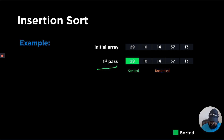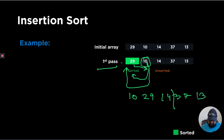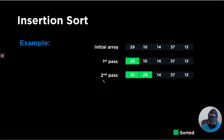In the second pass, we take the first value from the unsorted region and move it to its correct place in the sorted region. We do this by shifting number 29 and repeatedly shifting values to the right side, so that wherever we want to insert number 10, once we have stopped shifting the adjacent numbers, we know we have found the correct position. At the end of this pass, the array looks like 10, 29, 14, 37, and 13, with the sorted region containing 10 and 29.